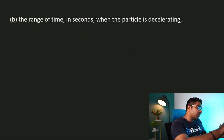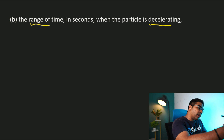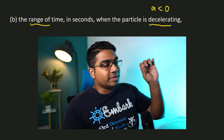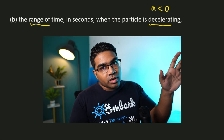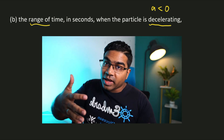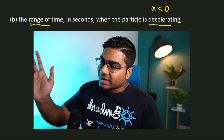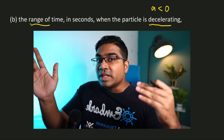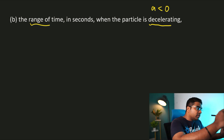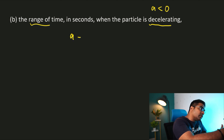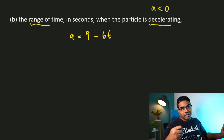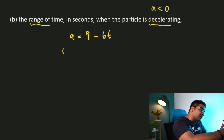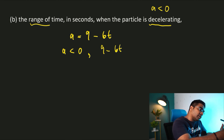Find the range of time in seconds when the particle is decelerating. When the particle is decelerating, acceleration is less than 0. However, it's very important to remember that this is only the case if the motion of the object is in the positive direction — the object is only decelerating when acceleration is negative and velocity is positive. We've already obtained the formula for acceleration: a = 9 minus 6t. Now we want to find the range of t for which acceleration is negative, i.e., a < 0, so 9 minus 6t < 0.